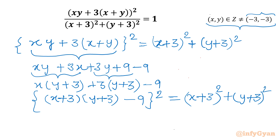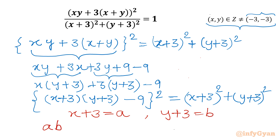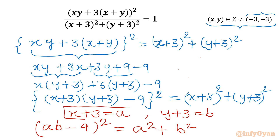Now I will use substitution. Let x plus 3 equal to a, and y plus 3 equal to b. Our equation converts to: (ab minus 9) whole square equal to a squared plus b squared. At last, we will replace our substitution back using these two relations. So our equation is (ab minus 9) whole square equal to a squared plus b squared.